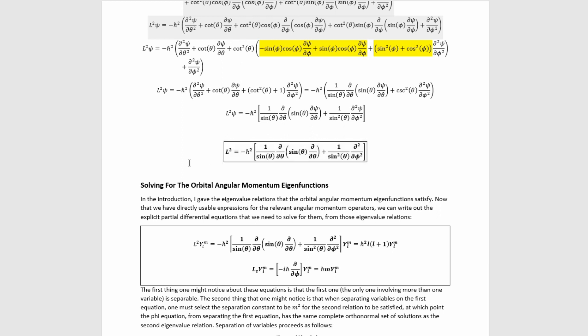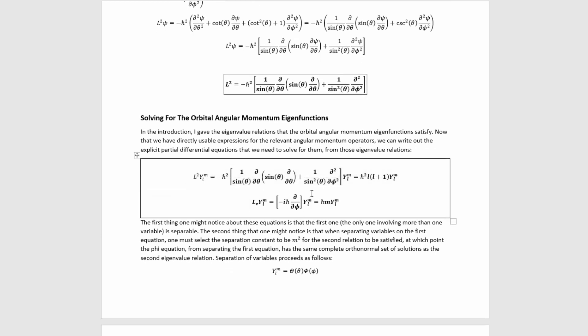Now we can apply this to solving the problem. In the introduction, I gave the eigenvalue relations that the orbital angular momentum eigenfunctions satisfy. Strictly speaking, those were abstract ket vectors, but picking the position representation means we're dealing with eigenfunctions. Now that we have directly usable expressions for the relevant angular momentum operators, we can write out the explicit partial differential equations that we need to solve by inserting these partial derivative formulas into those eigenvalue relations. Doing that gives us these partial differential equations.